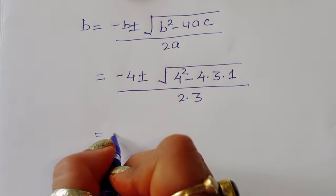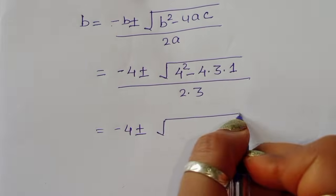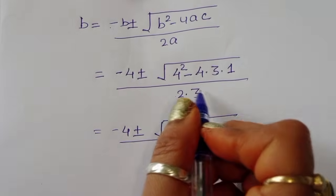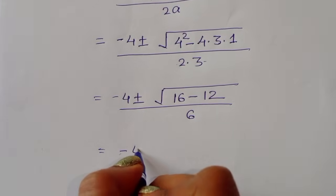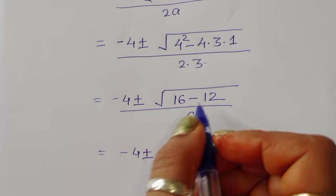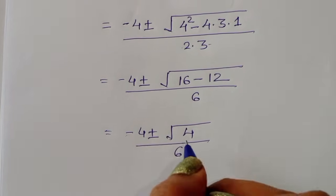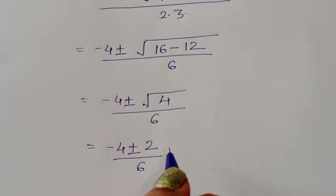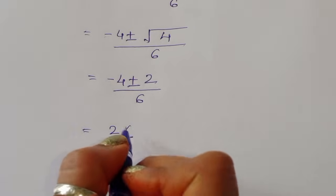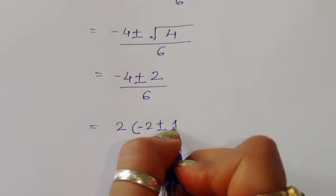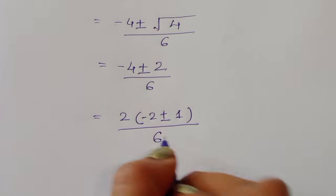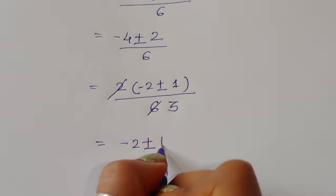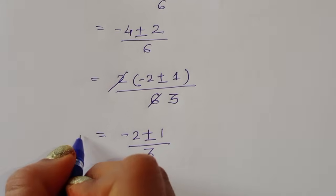This gives minus 4 plus or minus square root of (16 minus 12) divided by 6. So minus 4 plus or minus square root of 4, which is 2, divided by 6. Taking common factor 2: minus 2 plus or minus 1 divided by 3.